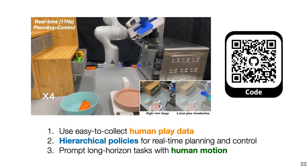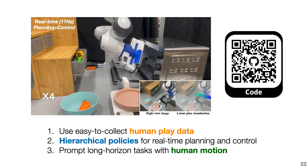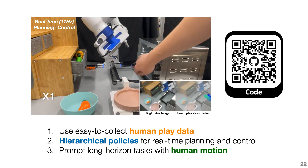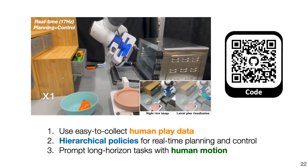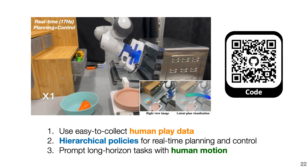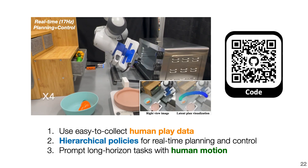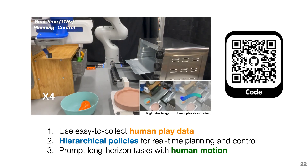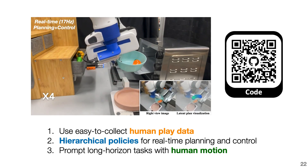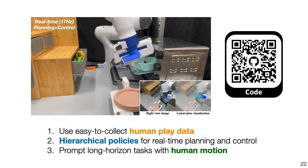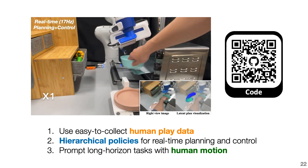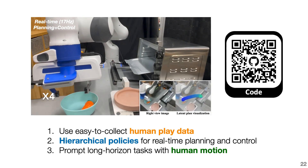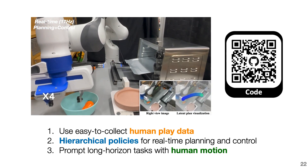In summary, in this work we introduced a new type of data — human play data — and a hierarchical policy that enables real-time planning and control. Our framework is able to prompt long-horizon robot manipulation directly from human motion video. To know more, feel free to check out our released code. Thank you.